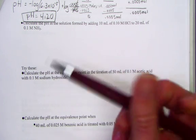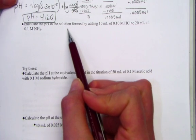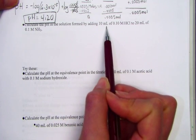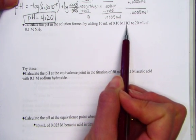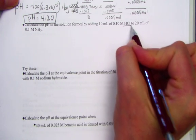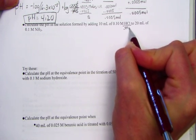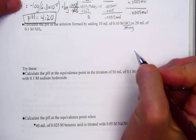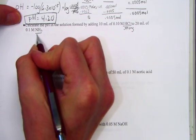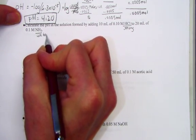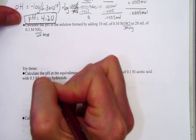Let's read our next example. Calculate the pH in the solution formed by adding 10 mL of 0.1 molar HCl to 20 mL of 0.1 molar ammonia - strong acid plus weak base.